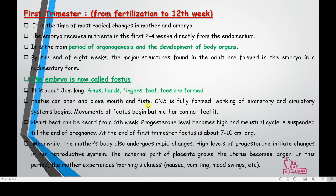The central nervous system is fully formed in these three months. The excretory and circulatory systems begin working. These movements cannot be felt by the mother yet. However, heartbeat can be heard from the sixth week. Progesterone level becomes high and the menstrual cycle is suspended till the end of pregnancy.